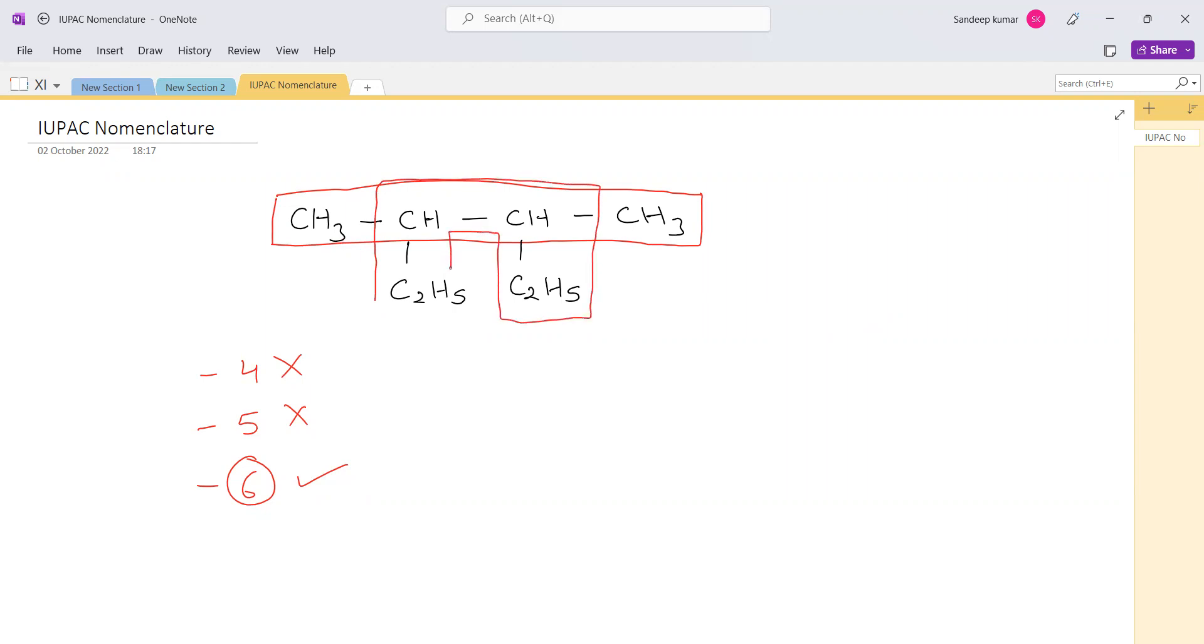and you can expand the structure and write down the structure once again and see the molecule in that. Let me do it for you. So we can write C2H5 as CH2 and CH3, then we can